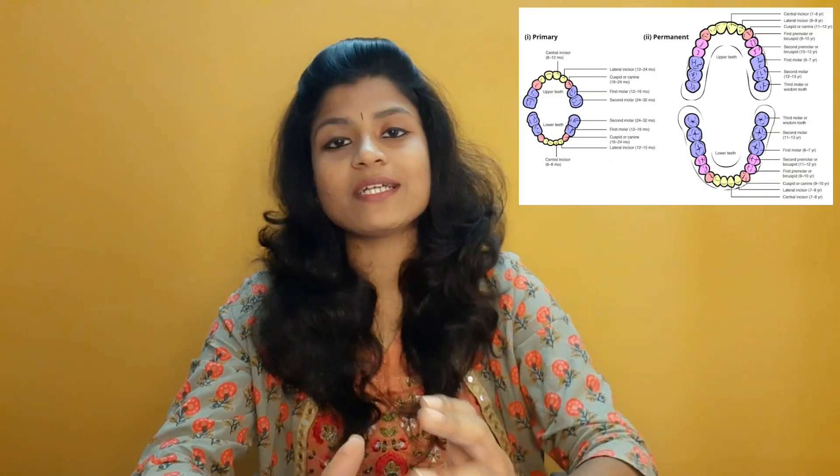The next criteria is root. In primary anteriors, the mesiodistal width of the root is narrow compared to permanent teeth, which have a slightly broader mesiodistal width in anterior roots. Primary tooth roots are slender, narrow, and longer relative to the size of the crown, whereas in permanent teeth the root size is smaller compared to the crown.